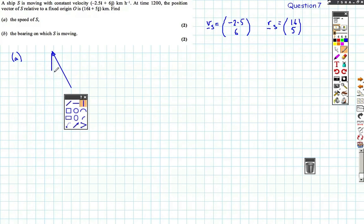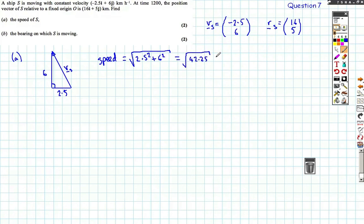That means I can find the speed. If this was the velocity vector, I can find the length of 2.5 to the left and a length of 6 up. So if we find the speed, we're just going to use Pythagoras. So we know it's a right angle triangle because we're using i and j. I can just do the square root of 2.5 squared plus 6 squared, equals root 42.25, which is 6.5 kilometers per hour, or km h⁻¹.